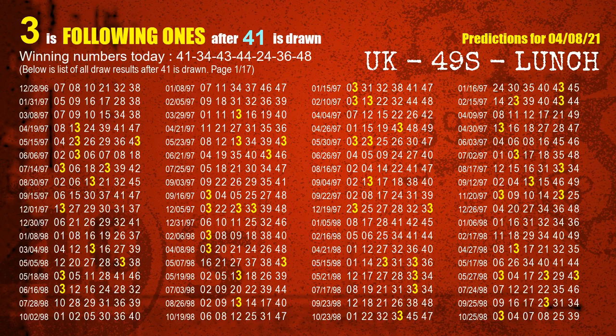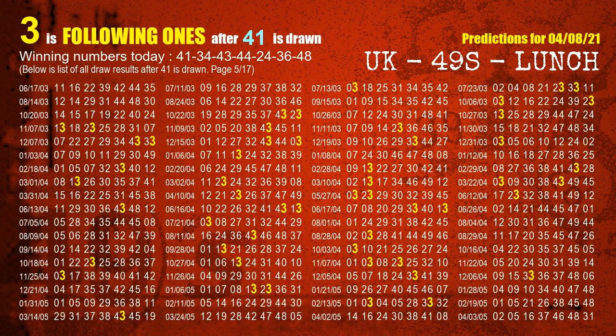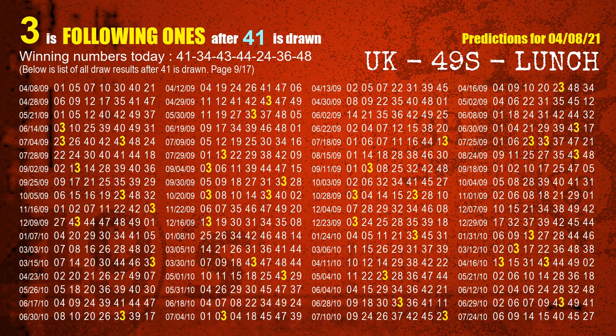First, we'll find out the following ones through today's result. Following numbers refer to those numbers being picked on the next draw after this one, and following ones are the units digits of those following numbers. The first winning number is 41. We list all draw results which are after a draw with 41 as a winning number. The most frequently following units digit is 3 when 41 is the winning number in the last draw. We highlight the units digit 3 in yellow for you.